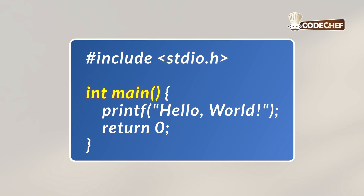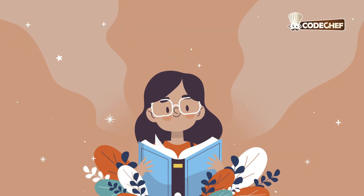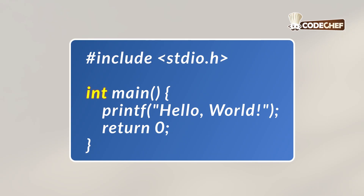Every C program needs a starting point — that's the main. Imagine a big storybook; the main function is where the story begins. Int just means the function will give back a number when it's done. Don't worry for now — that number is always zero. Inside these braces, we put our instructions. The computer reads them one by one, just like you read sentences in a book. Now look at printf — hello world. Printf is how we talk to the computer and ask it to print words on the screen. The words we want to show are inside the double quotes. The semicolon at the end is like a full stop in English — it tells the computer this instruction is finished.